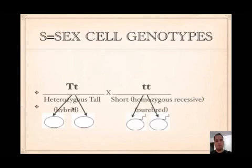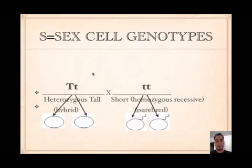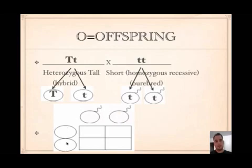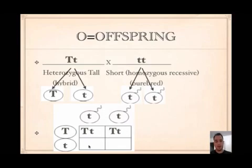The next step is to figure out the sex cell genotypes. If there's one gene, just separate the alleles — that's the law of segregation. If there are two genes, use FOIL to figure out the sex cells. Then set up your Punnett square: put the sperm on the top and the eggs on the side, carry them in, and fertilize by going across and down. Always put the capital letter in front. Then figure out the offspring for each box.